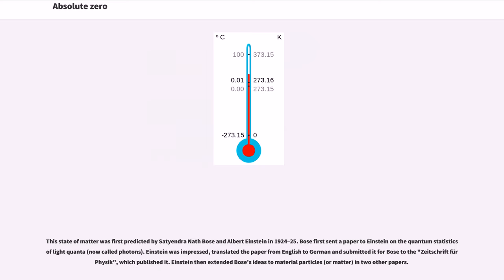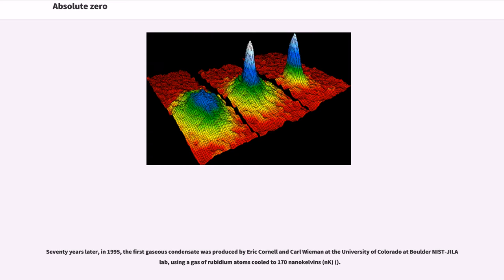This state of matter was first predicted by Satyendra Nath Bose and Albert Einstein in 1924-25. Bose first sent a paper to Einstein on the quantum statistics of light quanta, now called photons. Einstein was impressed, translated the paper from English to German and submitted it for Bose to the Zeitschrift für Physik, which published it. Einstein then extended Bose's ideas to material particles, or matter, in two other papers.